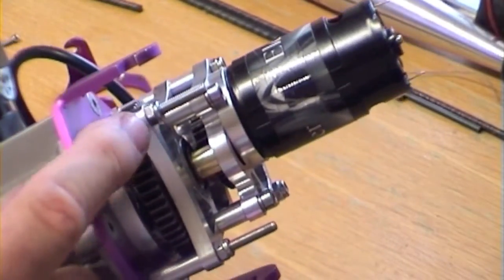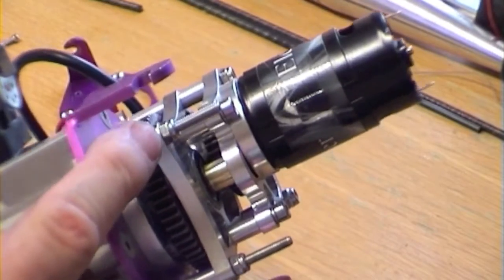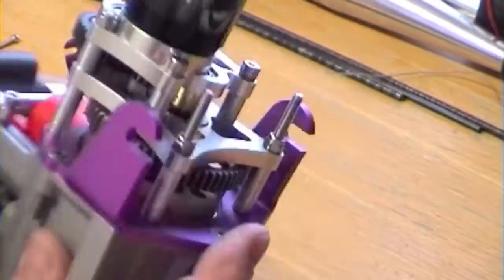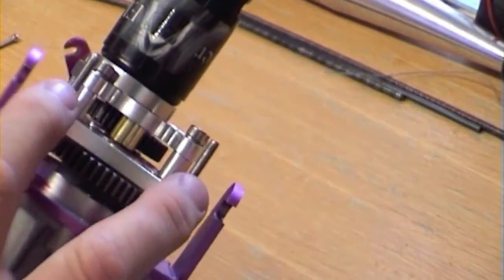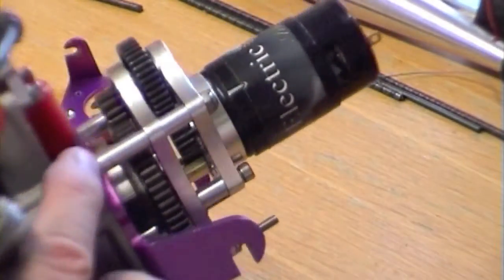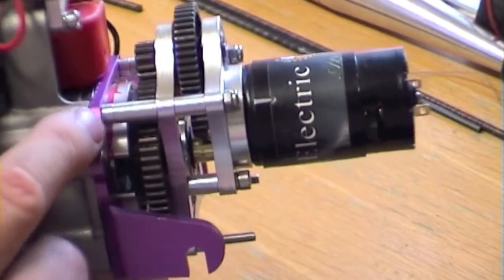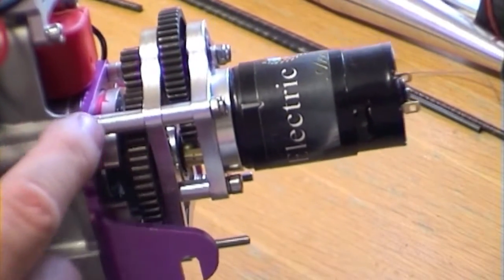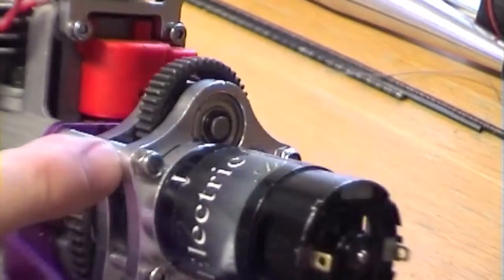So countersunk the bolts into there and put the M3 nuts on the end. And I've got to cut those off actually, they're still a bit long because all were the same length. Now if I can hold it right, you can see the screws go in there, spacers, and the nuts on the end.